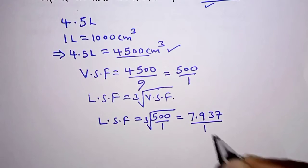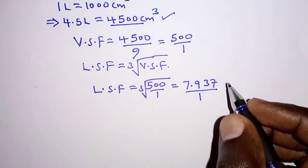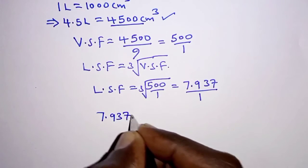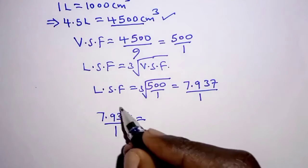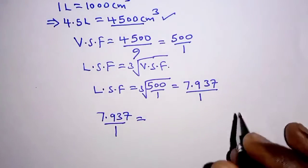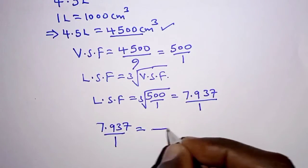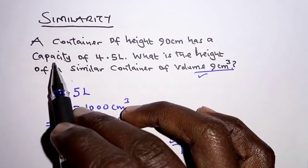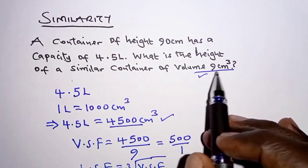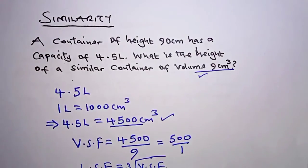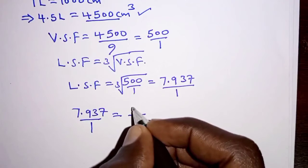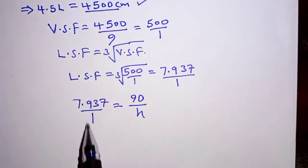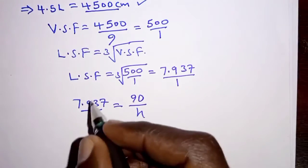This gives us 7.937 — expressed as a fraction with numerator and denominator so we can compare the heights of the two containers. The linear scale factor of 7.937 over 1 equals the height of the bigger container over the height of the smaller container. The bigger container has height 90 centimeters (it had the larger volume of 4500 cm³) and we need to find the height of the smaller container, so it's bigger over smaller on both sides.